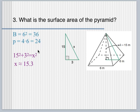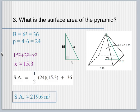So for today, just round to the tenths place once you solve for Pythagorean's Theorem. That is your slant height that you would plug in for l. And you should get around 219.6 square meters.